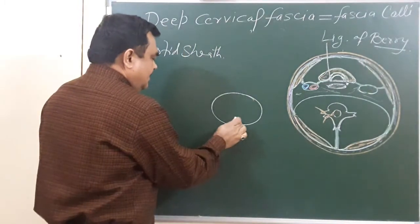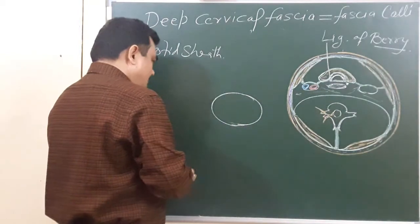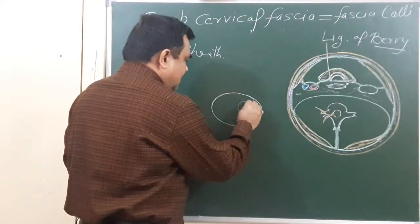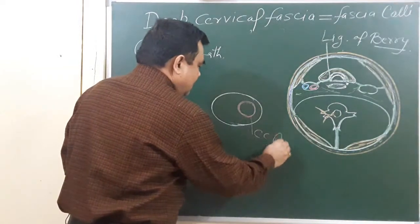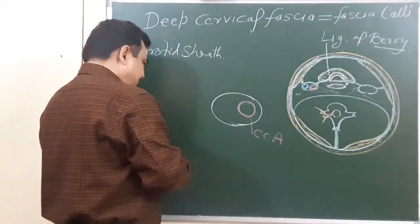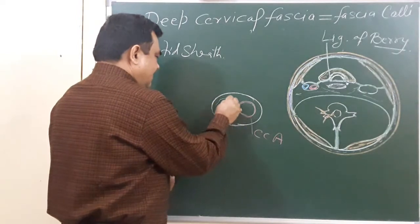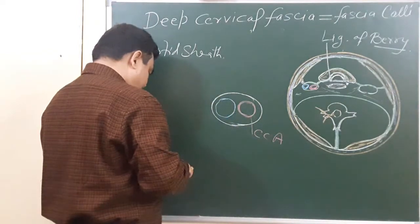Like this—on the medial side is the common carotid artery, and on the lateral side is the internal jugular vein.